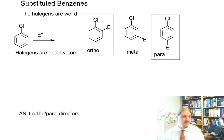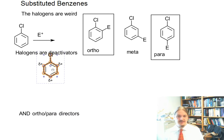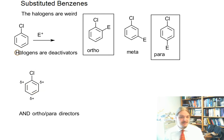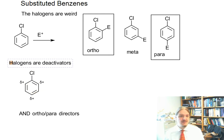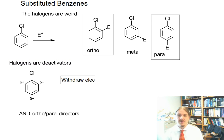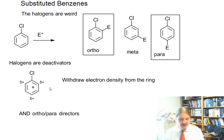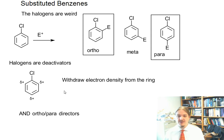First, let's talk about why halogens are deactivators, which means that they withdraw electron density from the ring. They withdraw electron density from the ring and they slow down reactions.